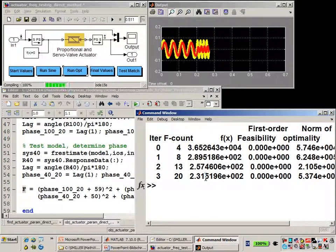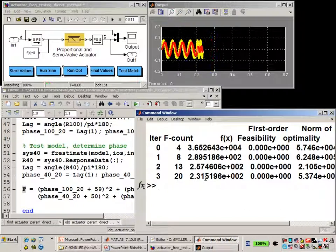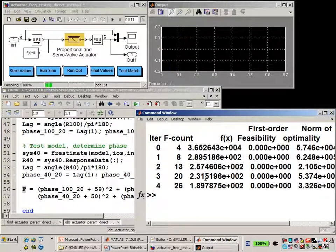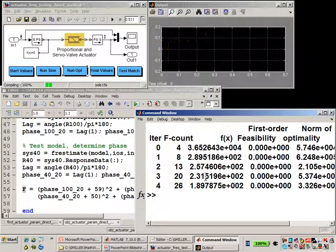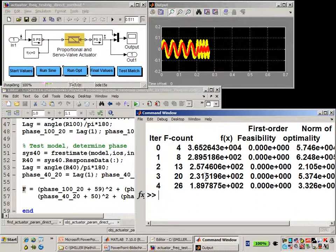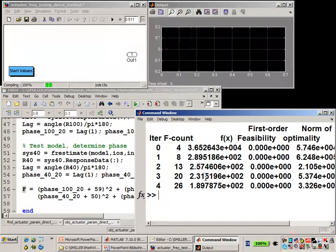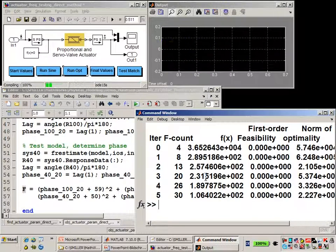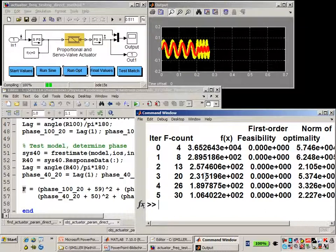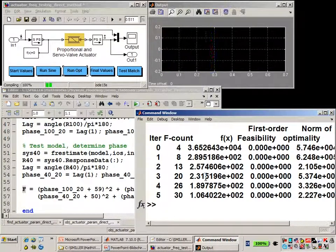At the conclusion of the optimization, we'll see how close we are to the data from the characteristics from the data sheet. fmincon is just one of a number of algorithms in the optimization toolbox. And we selected it because we know that this particular problem is non-linear and we wanted to set up a custom objective function.